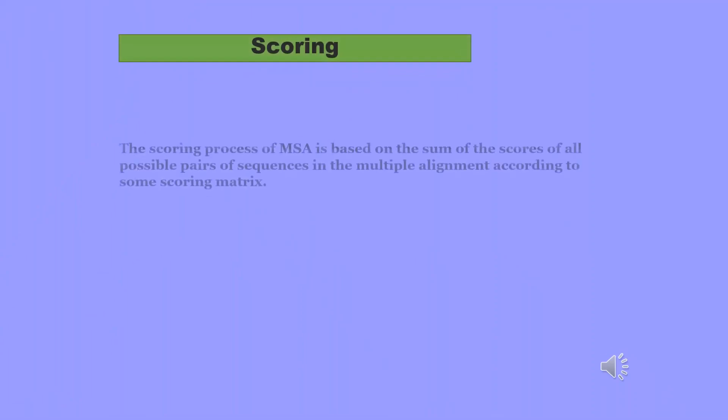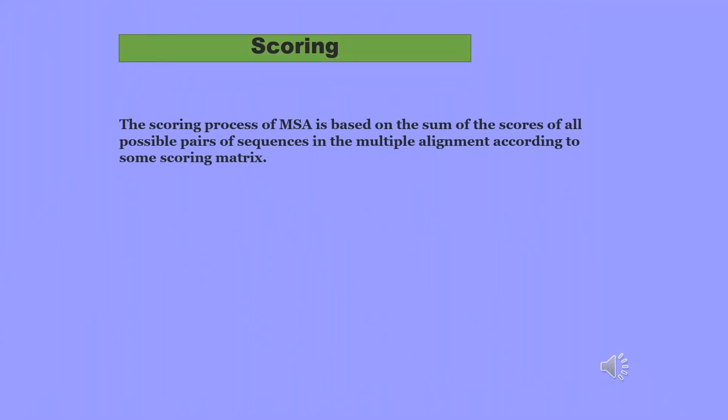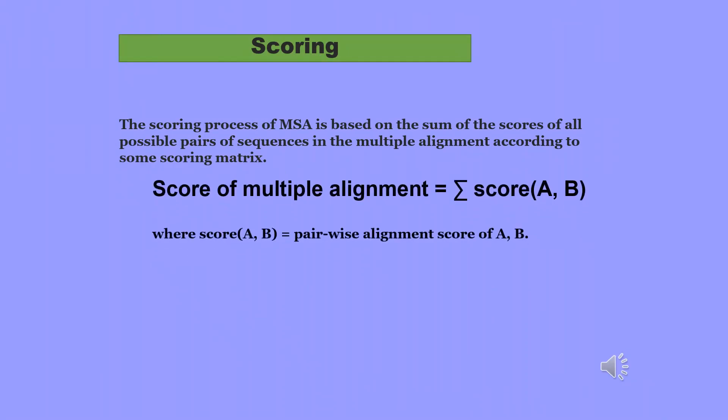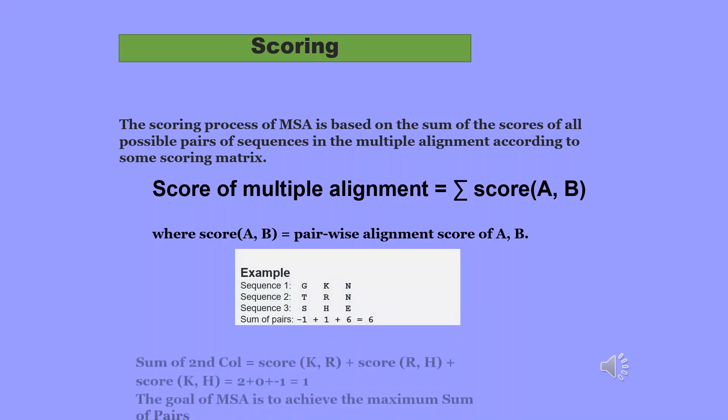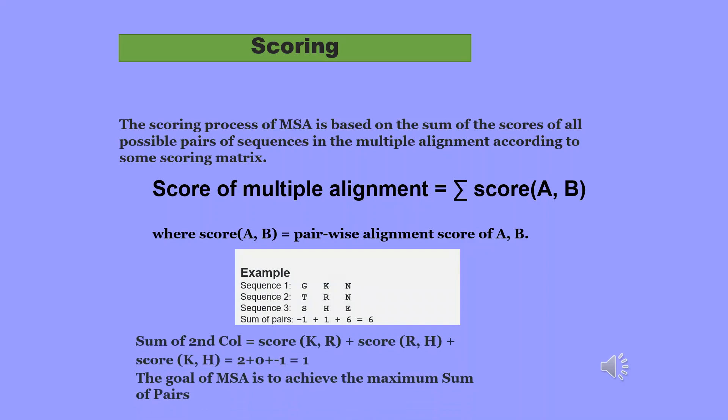Let us see the scoring process in MSA. The scoring process of MSA is based on the sum of the scores of all possible pairs of sequences in the multiple alignment according to some scoring matrix. Score of multiple alignment is equal to summation of whole of score A and B. Where whole score of A and B is equal to pairwise alignment scores of A and B. For example, sum of pairs of sequences 1, 2 and 3 is minus 1 plus 1 and plus 6 equal to 6. Sum of the second column is equal to sum of score K and R plus sum of score R and H plus sum of score K and H that is equal to 2 plus 0 plus minus 1 equal to 1. That means, the goal of MSA is to achieve the maximum sum of pairs.